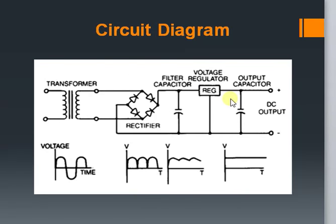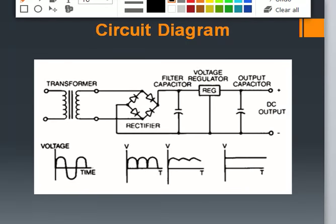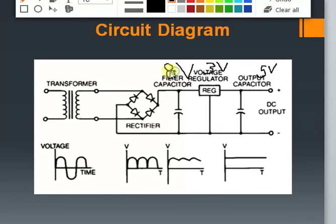There is a term attached with the regulator IC known as the dropout voltage. This refers to the minimum voltage required at the input side of the regulator so that it produces the desired output. For example, assuming the desired output voltage is 5 volts and the dropout voltage as mentioned in the regulator datasheet is 3 volts, then the minimum required voltage at the input of the regulator should be 8 volts so that it can produce the desired output.